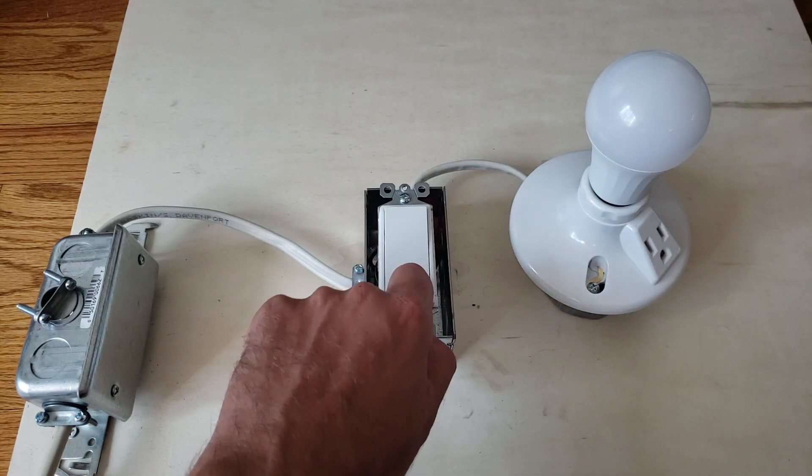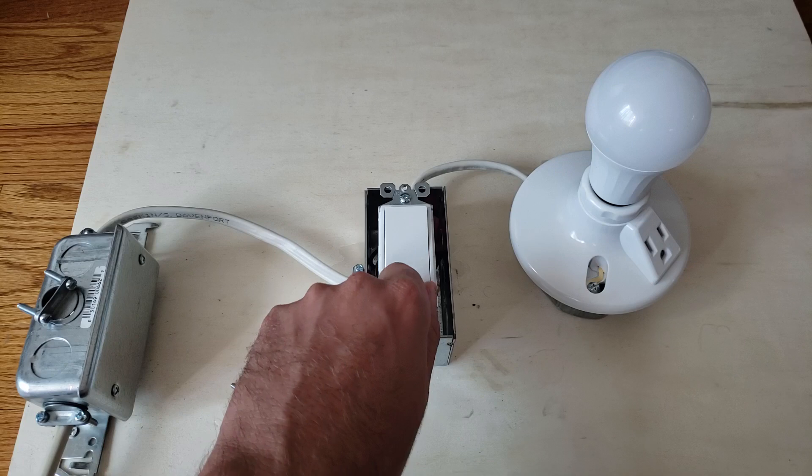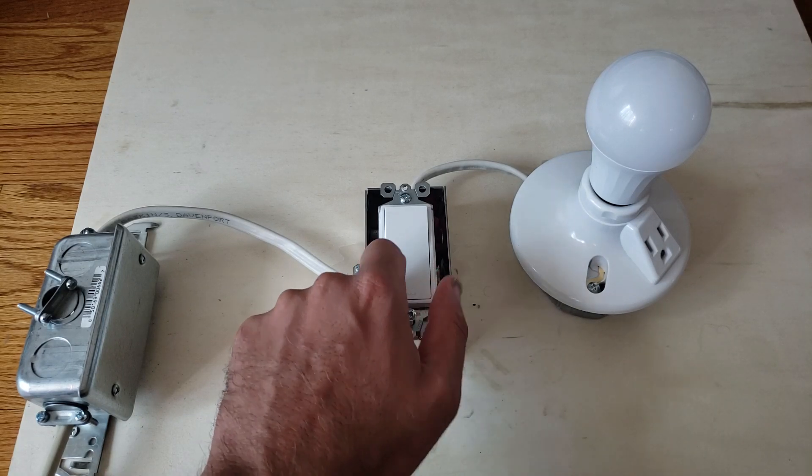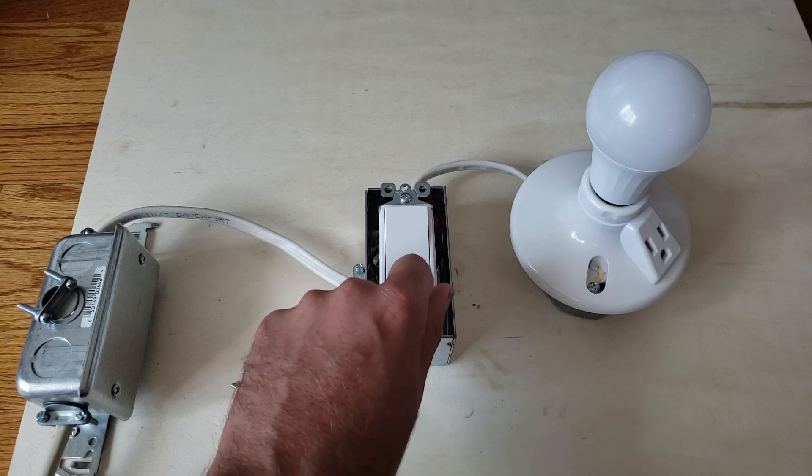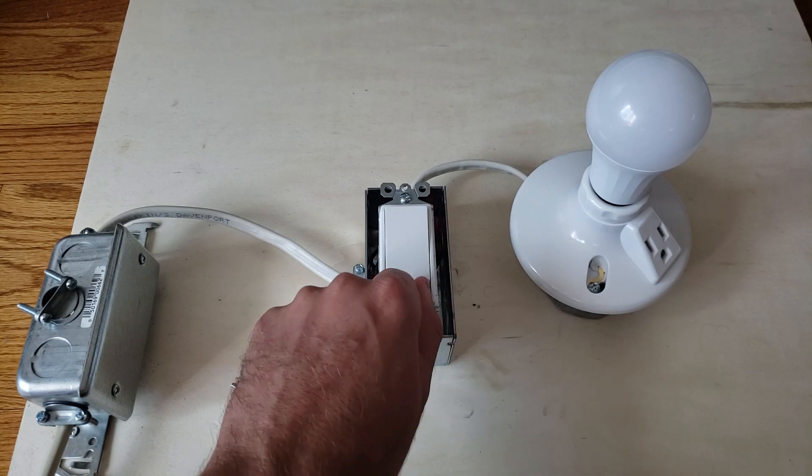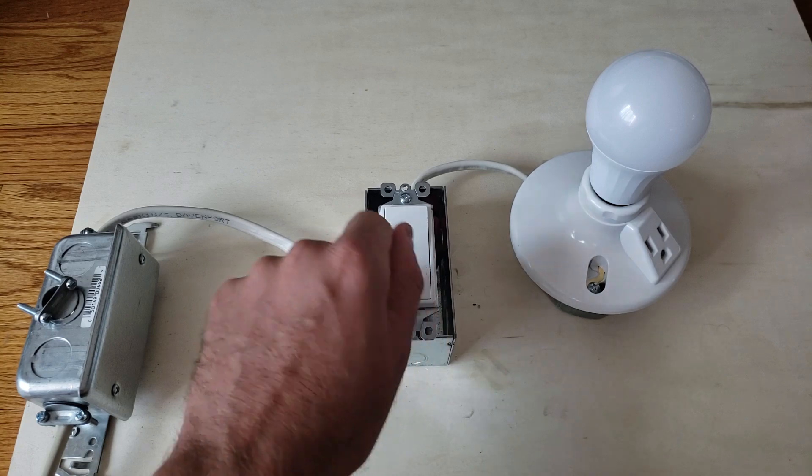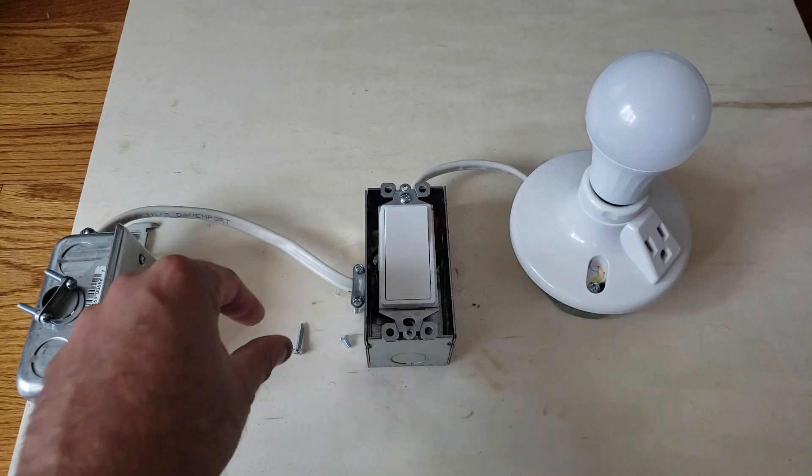But here's the thing: the majority of smart light switches require a neutral wire. If you're planning on putting those in, you need to make sure that you have a neutral wire. So we're going to show you how to check for a neutral wire. We're just going to remove the two screws holding the light switch on the junction box here.